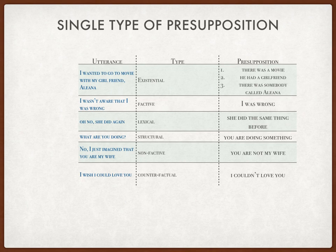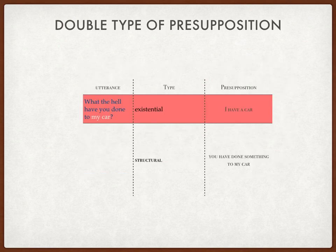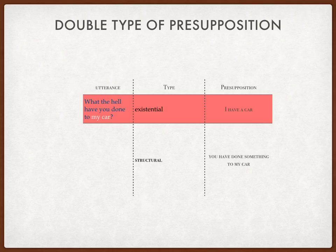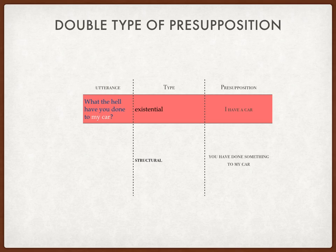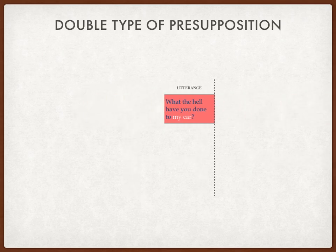Now let's continue to examples where you can find more than one type of presupposition in one sentence. The utterance is: 'What the hell have you done to my car?' From here we can easily find the existential type, because of the possessive adjective 'my' — so the first presupposition is: I have a car. The second type is structural, because there is a WH-question 'what,' giving the presupposition: you have done something to my car.